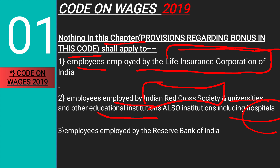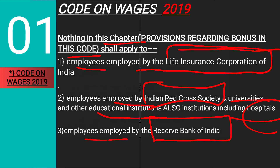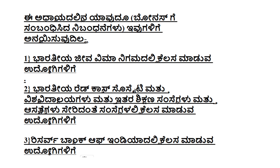The third provision is that employees employed by the Reserve Bank of India — whoever is working in the Reserve Bank of India — there is no compulsion to provide bonus for them, because the provisions of the bonus given in the Code of 2019 are not applicable to them.